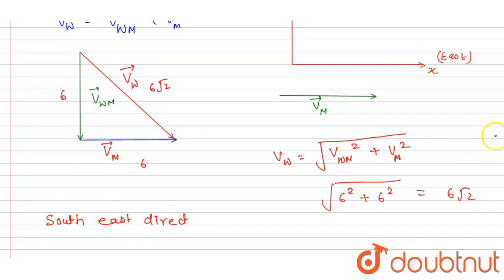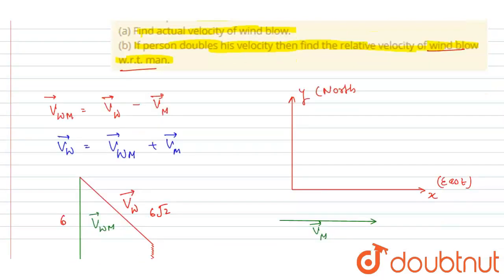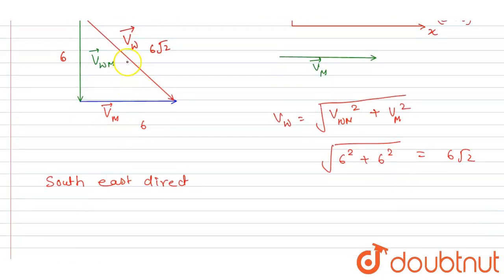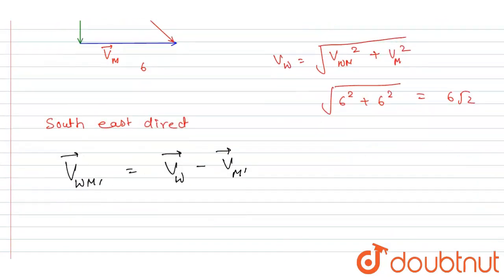In the second part, the man doubles his speed. Find the velocity of the wind blowing with respect to the man. We already have the actual velocity of the wind. The new velocity of the man has magnitude 12 and direction is still due east.